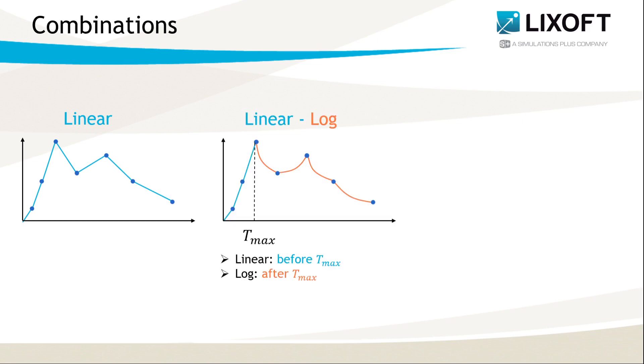One option that you can select in PK Analytics is to use a linear method to approximate the area before the time of Cmax and logarithmic formula after, to approximate better the exponential elimination phase.